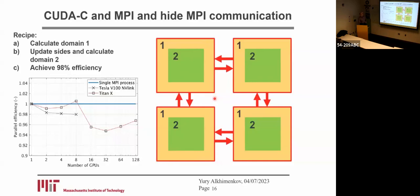In order to integrate our equation, we have to exchange boundary points between subdomains at each time step. For that, we can first calculate domain one, which is in yellow.